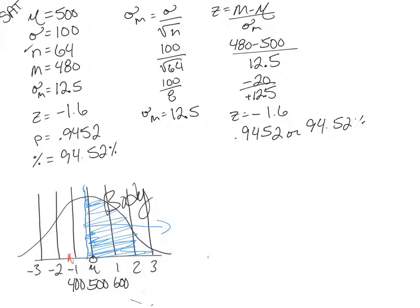So now the question is, if you take a random sample of 64 students, what's the probability that the sample mean for those 64 students will be greater than 480? And the answer is, there's a 94.5% chance that those 64 students' average score will fall greater than 480. So that's pretty high.